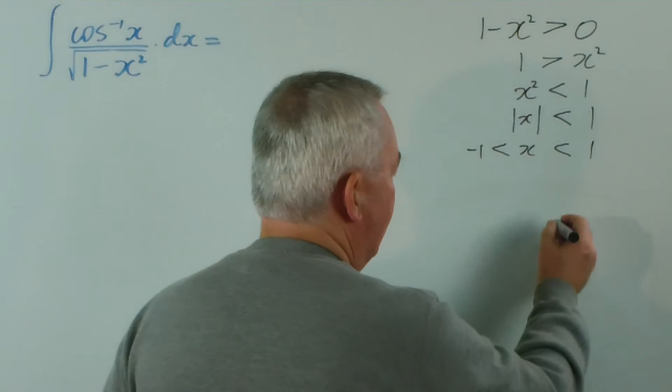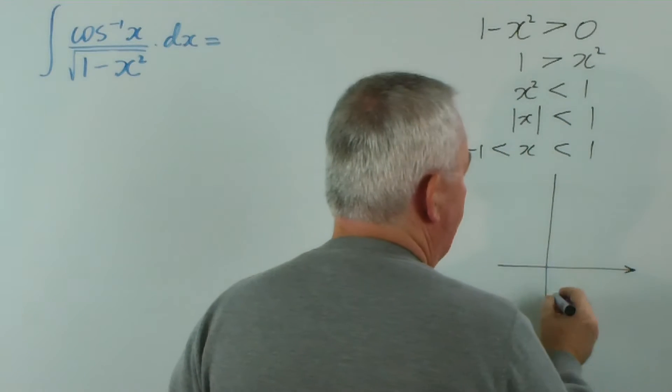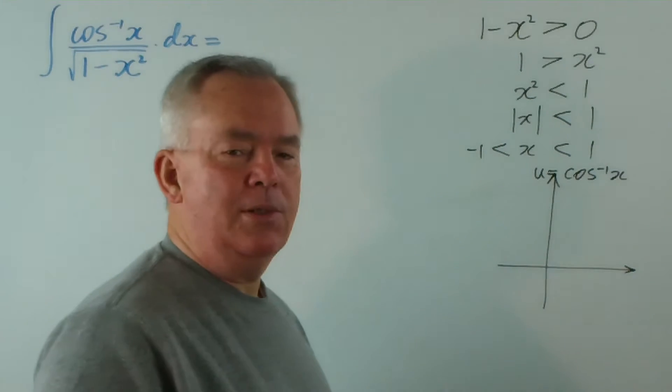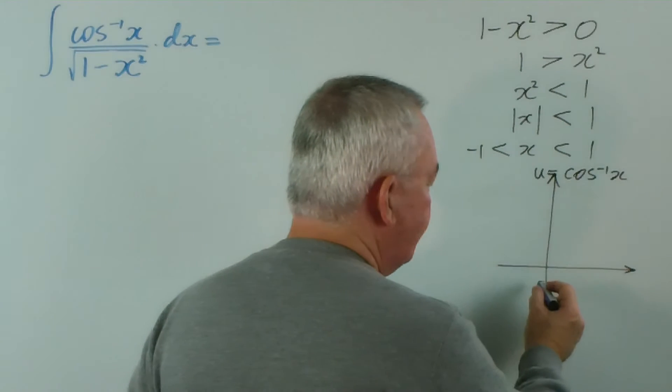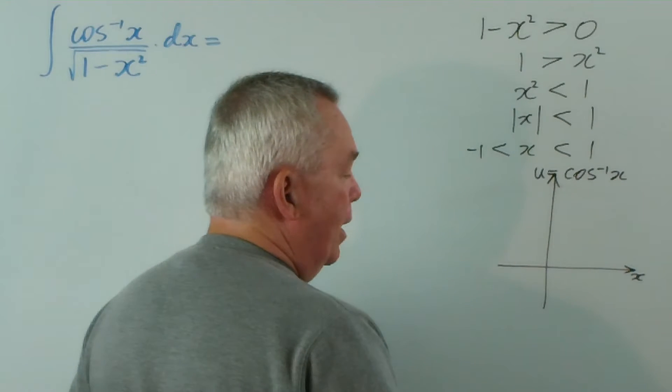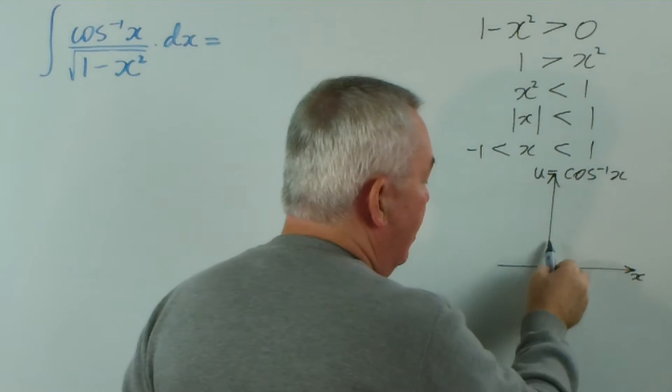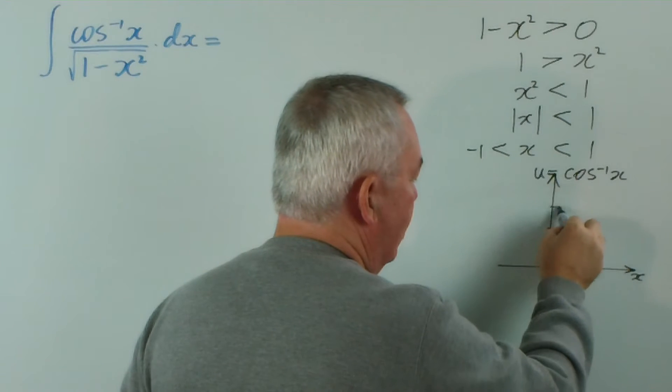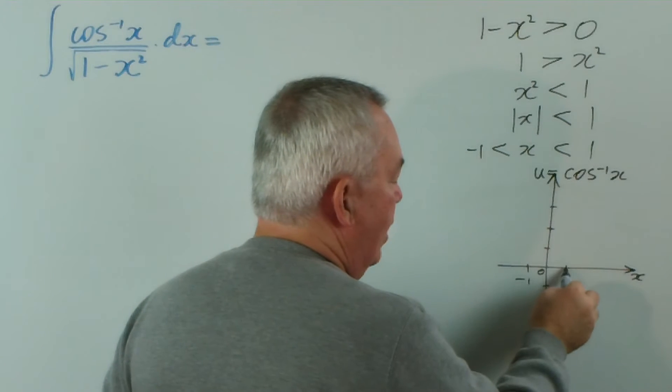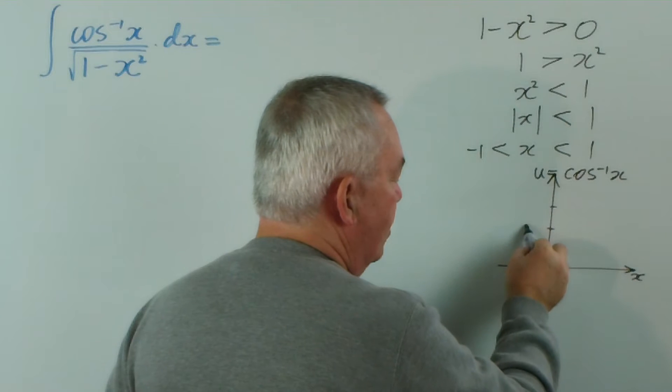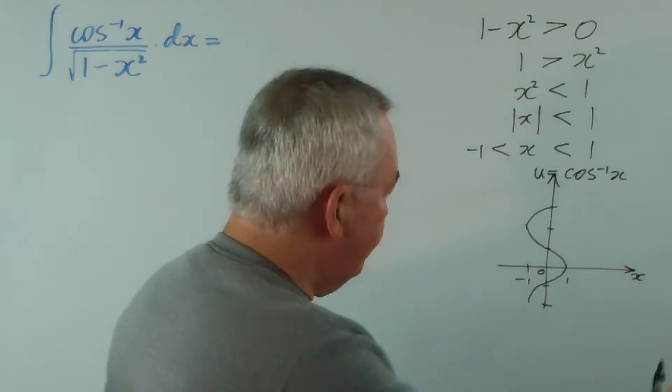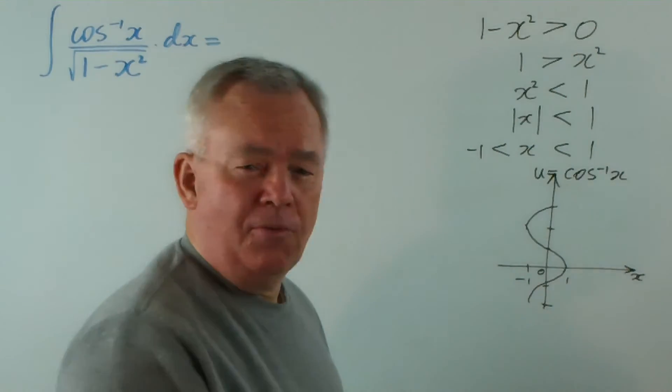And if we graphed the inverse cosine function—so for example, let's call it u equals the inverse cosine of x, that seems quite reasonable, in fact we're going to use that as our substitution later. That means that x is going to be the cosine of u. And it turns out that our curve will zigzag or oscillate forever and obviously is not a function.